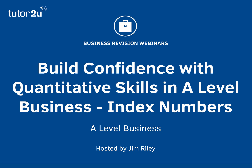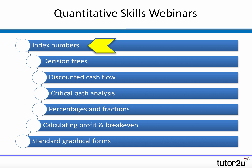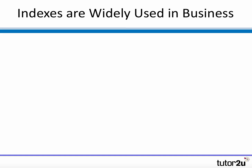Hi there. This is a recording of a recent student revision webinar where we took a look at one important part of quantitative skills for A-level business: index numbers. It was the first in a series of webinars taking a more detailed look at important numerical skills that A-level business students need to get to grips with ahead of the exams — the kind of things the examiner will expect you to understand, calculate, and interpret.